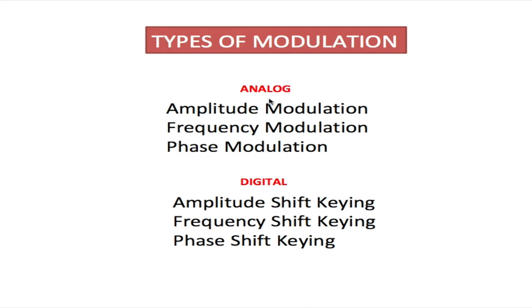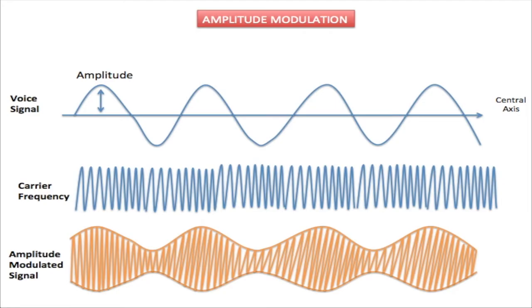Now I'm going to explain how each one of these works, starting with amplitude modulation. Amplitude modulation is widely used for AM radios and VHF aircraft radios, and it is the earliest form of modulation. Here we have the voice signal and the carrier signal. The carrier signal does exactly what it says — it carries the voice signal from the transmitter antenna to the receiver. Your voice signal is multiplexed with the carrier signal, and the voice signal controls the amplitude of the carrier signal.